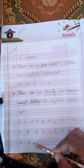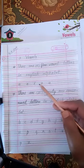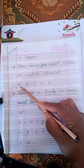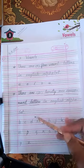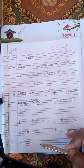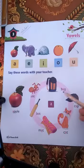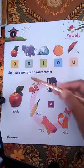Okay. So, will you remember? There are five vowel letters, that is A, E, I, O, U. And there are 21 consonant letters. Okay, students. So, now we will see how we use this.